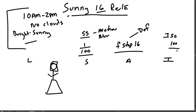The Sunny 16 rule holds true regardless of the subject. With the bride in her white dress and the groom in his dark tuxedo, both are properly exposed. And if you brought a black and white cow into the scene, the cow, the bride, and the groom would all be properly exposed.